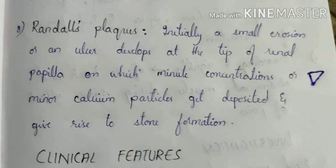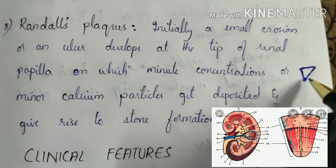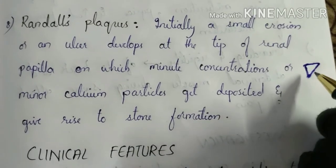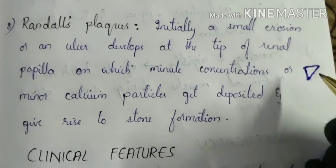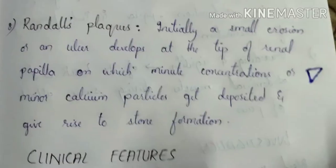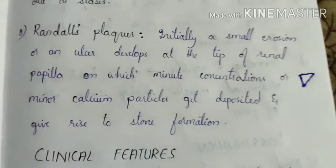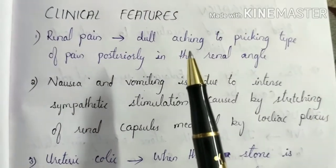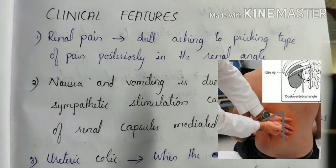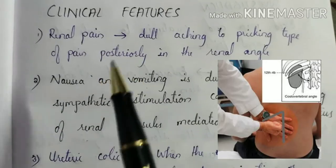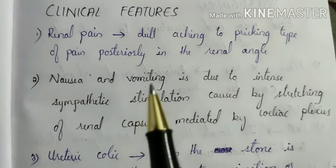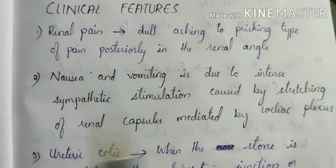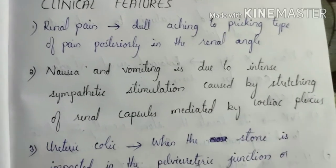Randall's plaque: initially there is either a small erosion or an ulcer formation at the tip of the renal papilla, on which minute calcium particles get deposited, ultimately resulting in stone formation. Coming to the clinical features: there is renal pain which is dull and pricking in character, present posteriorly in the renal angle. There is nausea and vomiting due to intense sympathetic stimulation caused by stretching of the renal capsule, mediated by the celiac plexus.